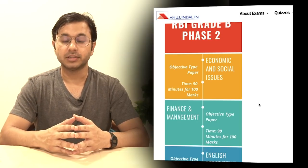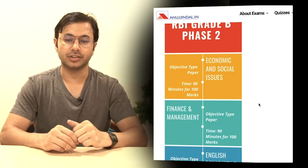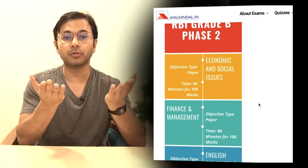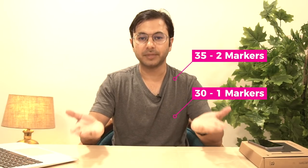I have launched e-books for Quant, Reasoning, and English containing more than 600 questions each, and you can purchase these books by clicking on the i-card above. Coming to phase 2 of RBI Grade B, there are a total of 3 papers: Economic and Social Issues, Finance and Management, and English. While ESI and Finance and Management are both objective in nature, English is a descriptive paper. Both ESI and FM contain a total of 65 questions to solve in 90 minutes. These 65 questions are divided into 2-mark and 1-mark questions — 35 two-markers (70 marks) and 30 one-markers (30 marks), creating a question paper of 100 marks.